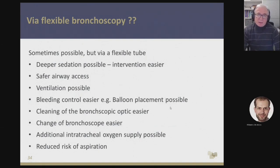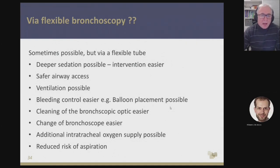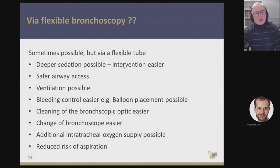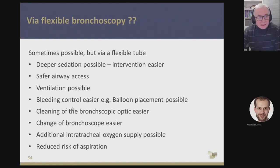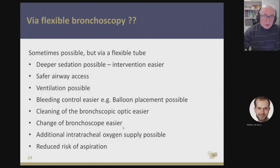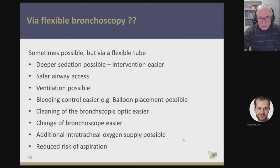Can we do it via flexible bronchoscopy? Sometimes yes, it's possible, but always a flexible tube is involved — a rigid tube gives additional safety. The tube allows deep sedation, making intervention easier. You have a safer airway access; in case of problems, ventilation is possible. In case of bleeding, you can place a balloon. You can clean your bronchoscopic optic easily — go out, clean it, and go inside again. If necessary, you can change the bronchoscope to one with a larger working channel. Additional intratracheal oxygen supply is possible, and a tube reduces the risk of aspiration.